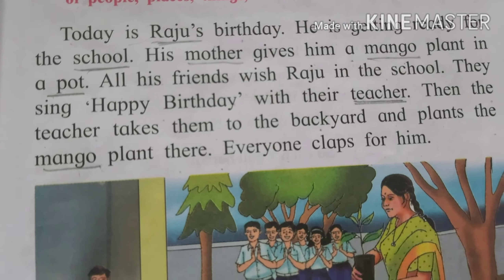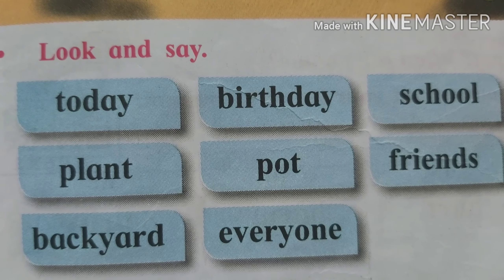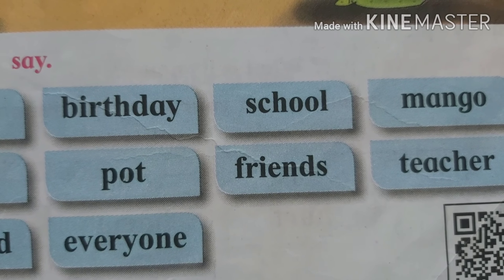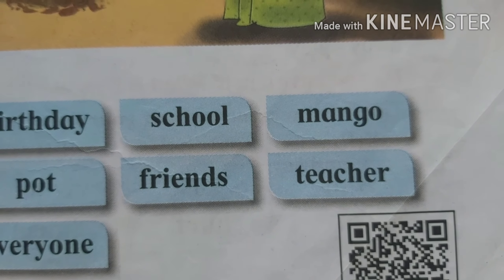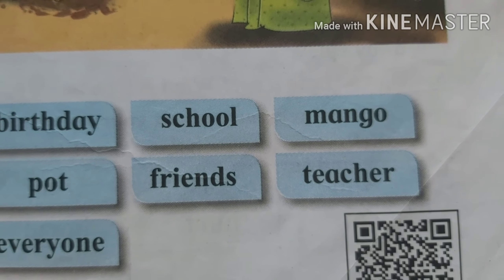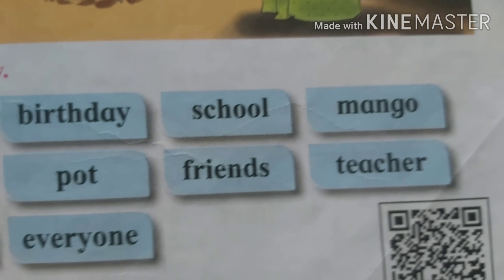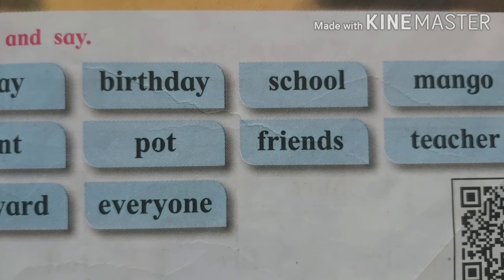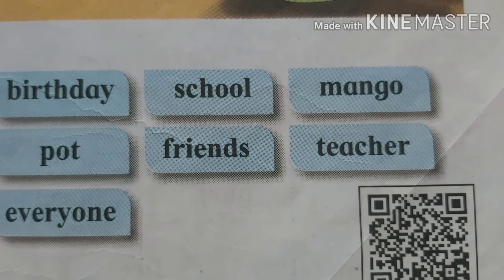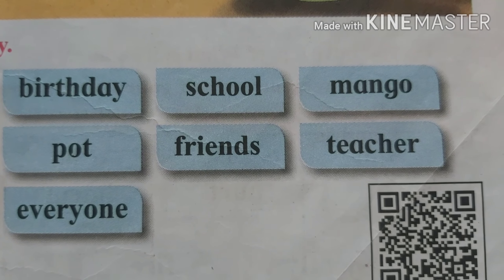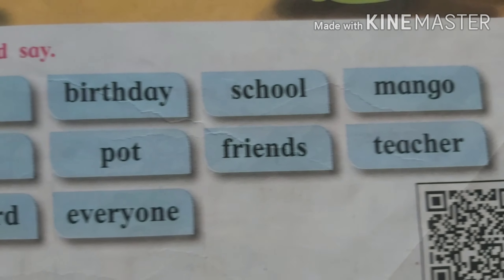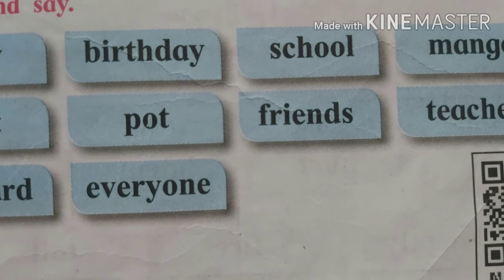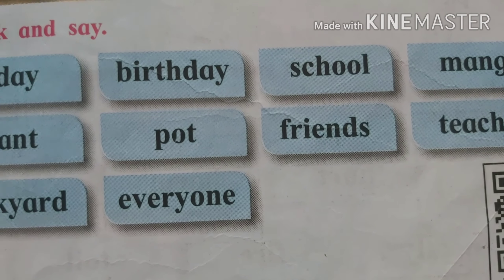Look and say — these are the naming words from the passage. T-O-D-A-Y: today. B-I-R-T-H-D-A-Y: birthday. S-C-H-O-O-L: school. M-A-N-G-O: mango. P-L-A-N-T: plant. P-O-T: pot. F-R-I-E-N-D-S: friends. T-E-A-C-H-E-R: teacher. B-A-C-K-Y-A-R-D: backyard. E-V-E-R-Y-O-N-E: everyone.